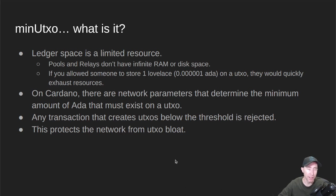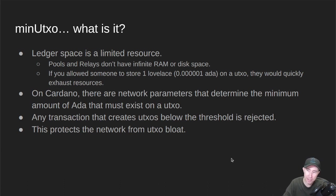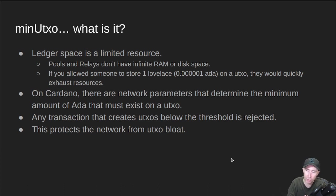So MinUTXO — what is it? The idea is that ledger space is a limited resource. You can't just have a ledger grow infinitely. There's only so much memory and hard drive space that pools and relays have to run the Cardano network. If you were to allow someone to store just a single lovelace on a UTXO, you could very quickly fill up the ledger and exhaust everybody's hard drives and RAM. So on Cardano, there's a network parameter that determines the minimum amount of ADA that must exist on a UTXO, preventing ADA from being split into chunks too small and thus bloating the UTXO ledger. Any transaction that falls below the MinUTXO threshold is rejected.